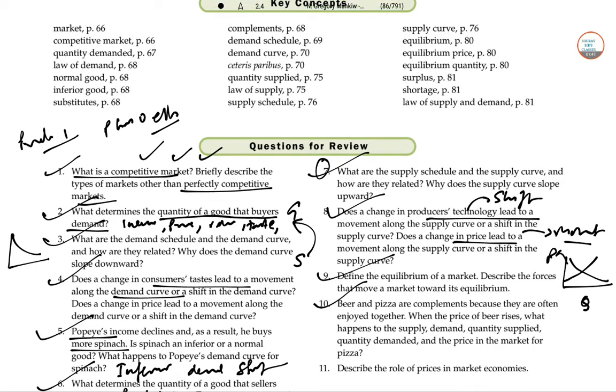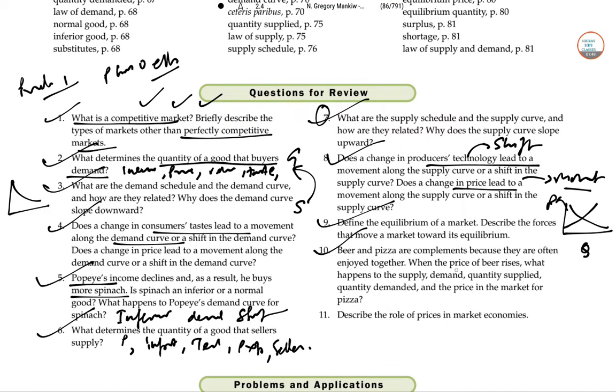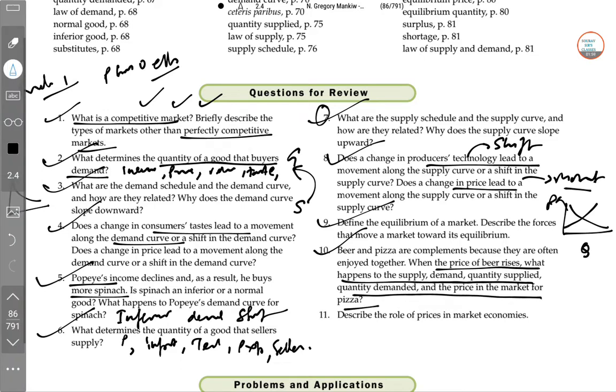Question 10. Beer and pizza are complements because they are often enjoyed together. When the price of beer rises what happens to the supply and quantity demanded of the pizza. So for this I need to get to the diagram.